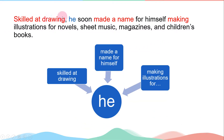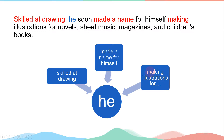第二句：Skilled at drawing, his son made a name for himself, making illustrations for novels, sheet music, magazines, and children's books。跟剛才的句子很像，主詞都是 he。本來是：he was skilled at drawing，把前面省略掉；he made a name for himself；第三個句子 he made illustrations for，後面變成分詞構句。跟剛才的句型很像。